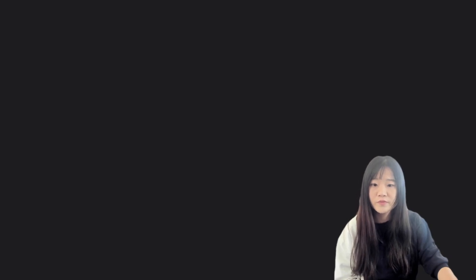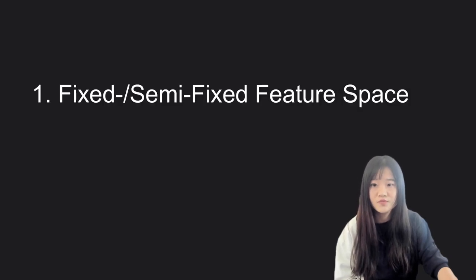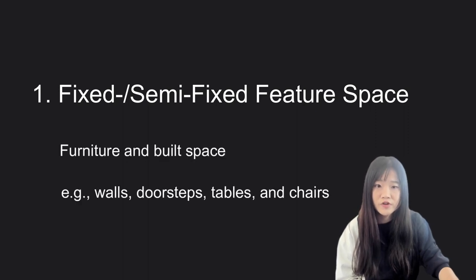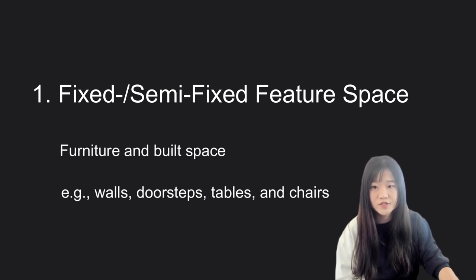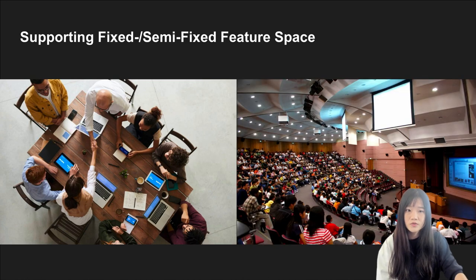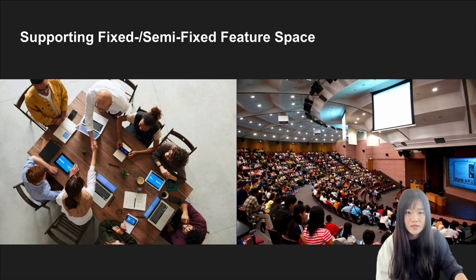The first notion is support for fixed and semi-fixed feature space. We are in a material world. The fixed and semi-fixed feature space describes how furniture and built space can help enact our social relationships. For instance, rearranging tables can affect how people have conversations around them. Another example is lecture halls that lay out a social-spatial order regarding who is in power to talk and who is listening.